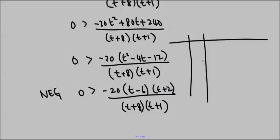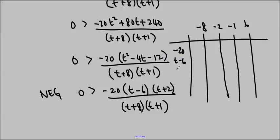So we have a negative 8, we have a negative 2, and we're just doing them in order. Negative 1 and a 6. So I got the negative 8 from here, the negative 2 from here, the negative 1 from here, and the 6 from here. And we're going to write every single factor into our chart. So negative 20, t minus 6, t plus 2, t plus 8, and t plus 1.